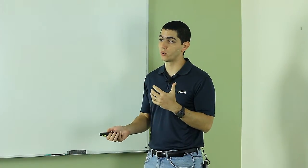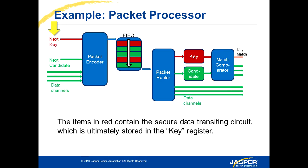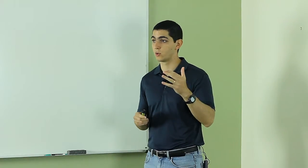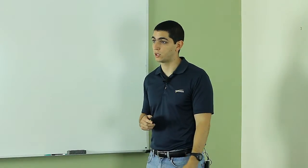I'm going to show some of the concepts and Jasper's tools using one small example design that deals with both secure and non-secure data. On this design, there is a secure input — the key input — that is processed downstream, and the secure key eventually ends up on this key storage element. All of the other inputs, the green inputs, are non-secure and they should never affect the key. Also, the green outputs are non-secure outputs which should never see the value stored in the key.